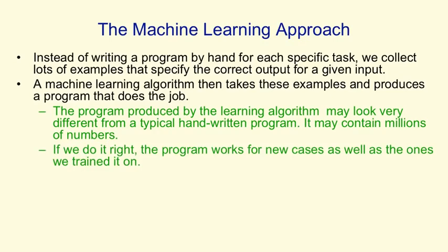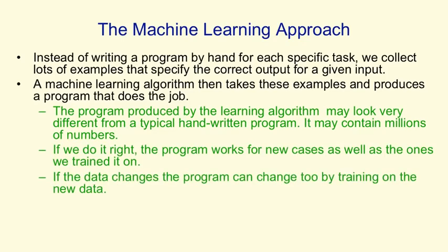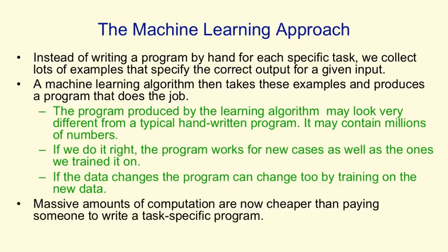If we do it right, the program should work for new cases as well as the ones it's trained on. And if the data changes, we should be able to change the program relatively easily by retraining it on the new data. Now, massive amounts of computation are cheaper than paying someone to write a program for a specific task. So we can afford big, complicated machine learning programs to produce these task-specific systems for us.